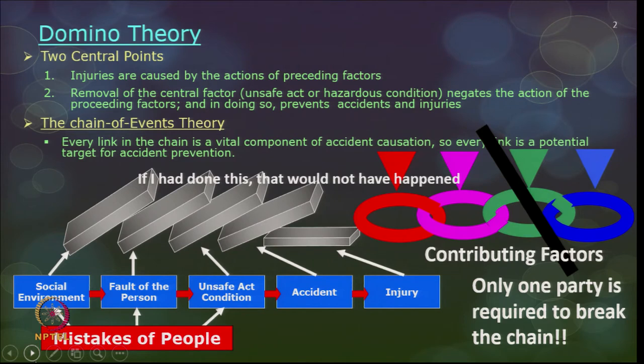Injuries are generally caused by actions of preceding factors. Removal of one or two factors — whether an unsafe act or a hazardous condition — can negate the action of preceding factors and prevent accidents and injuries. In the chain of events theory, every link is a vital component of accident causation and hence a potential factor for accident prevention. Some issues can be social environment, fault of the person, unsafe act or unsafe conditions, and the actual injury. During accident investigation, never look only at the final issue — you need a broad view of what really happened.